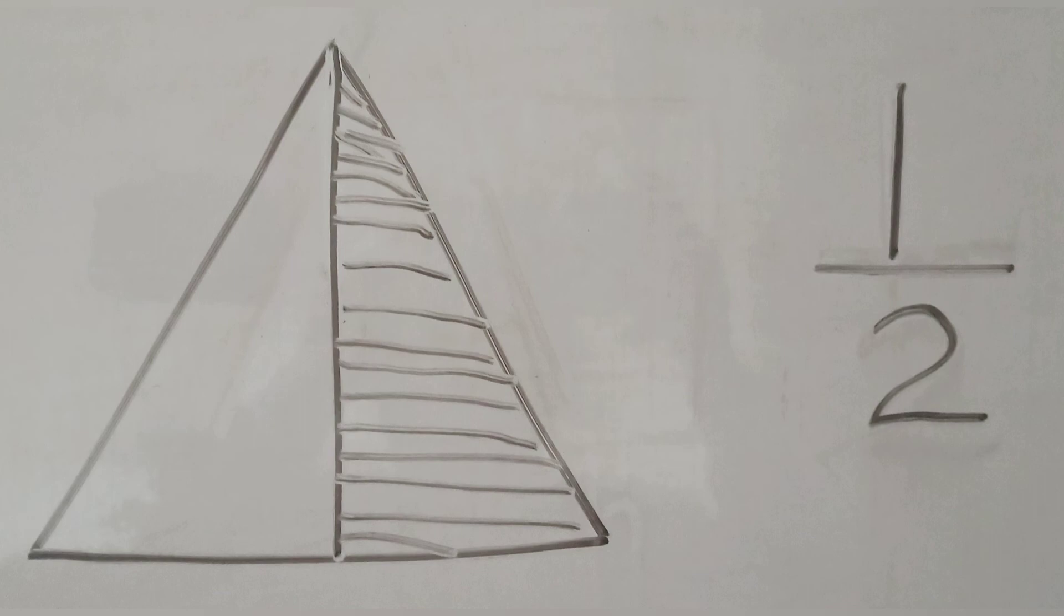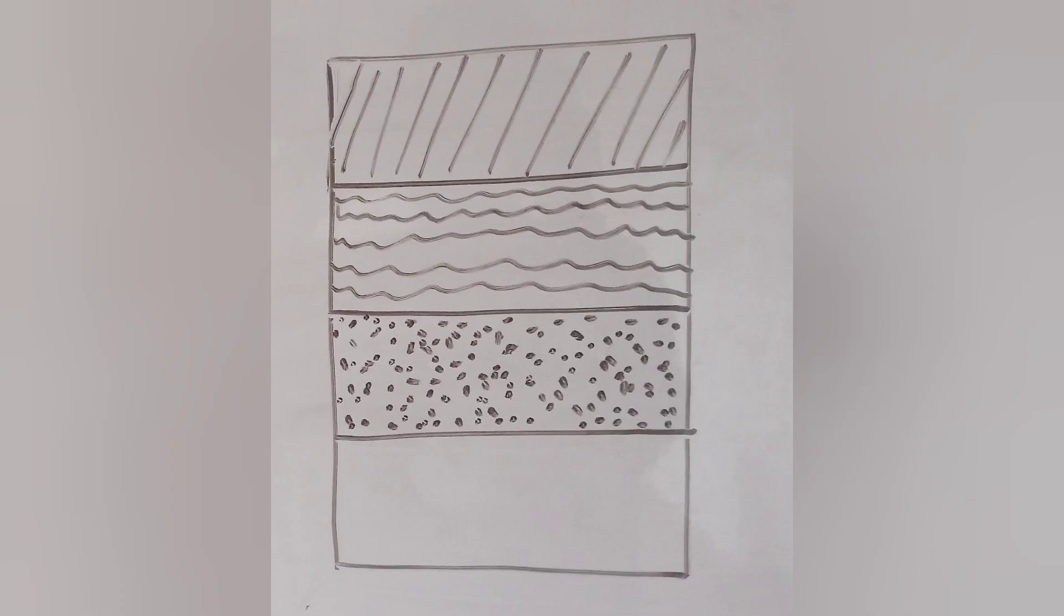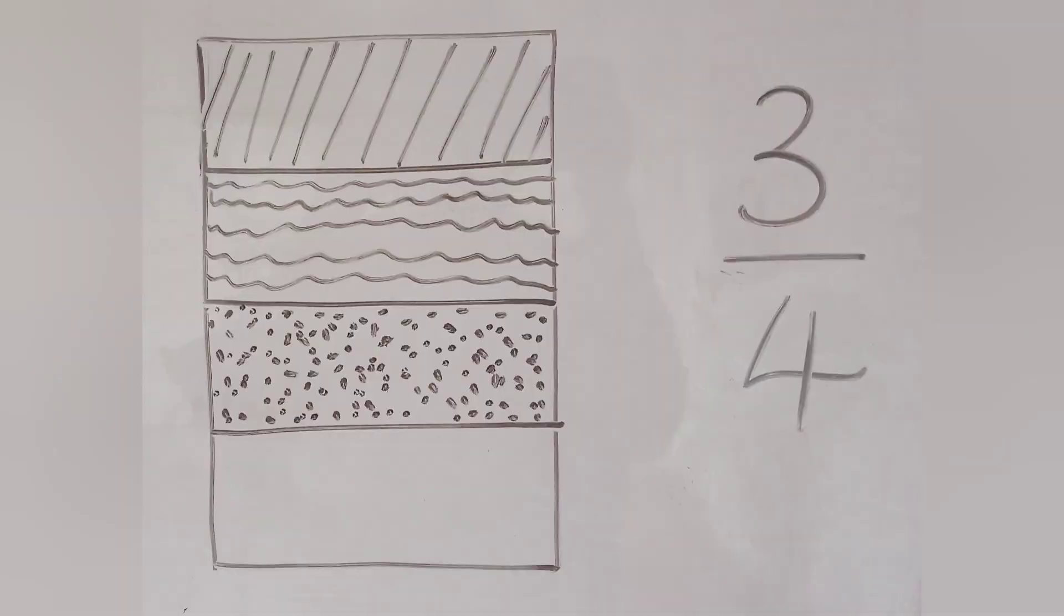The next shape is a rectangle with 4 equal parts. The rectangle has 3 parts out of the 4 parts shaded. So, the fraction of the rectangle that is shaded is 3 quarter.